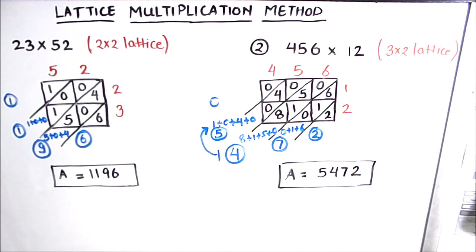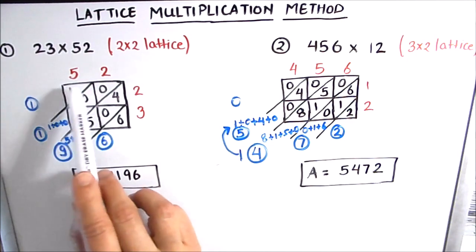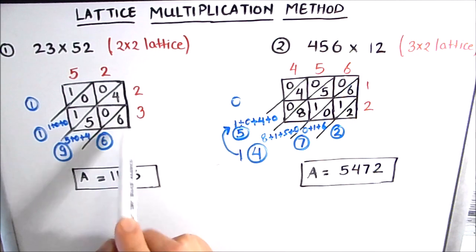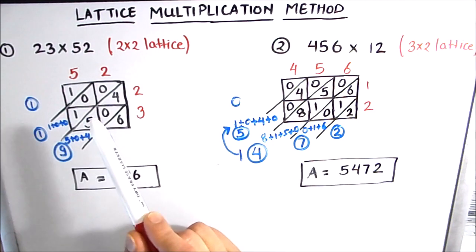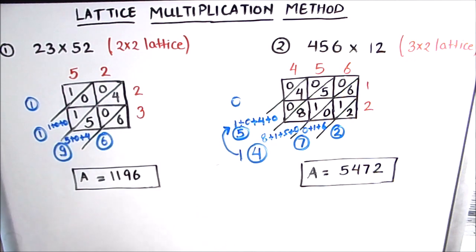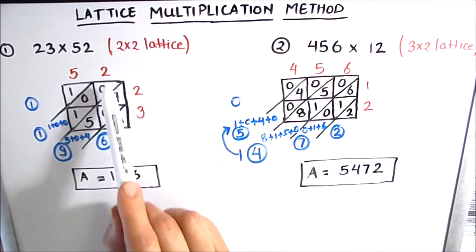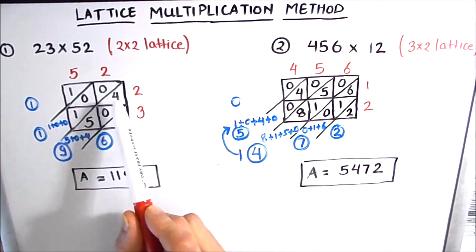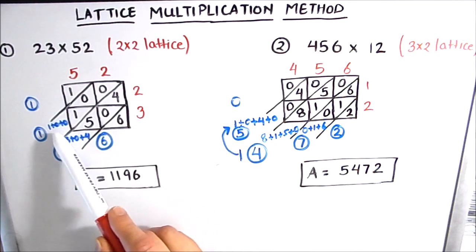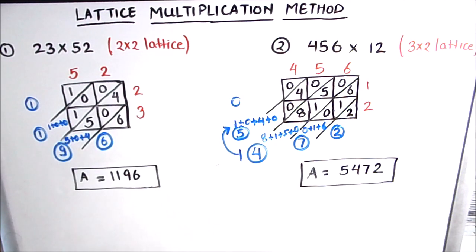So this is how we do lattice multiplication. To recap: for a two-digit by two-digit multiplication, draw a square with two rows and two columns. Write the numbers along the rows and columns, then draw the diagonals of all boxes. Multiply each number along the row by each number along the column, writing the result in the corresponding box. Finally, add the numbers along each diagonal to get the final result. I hope this video is helpful. If you like the video, please hit the like button and subscribe to my channel for more math videos. Thanks for watching!